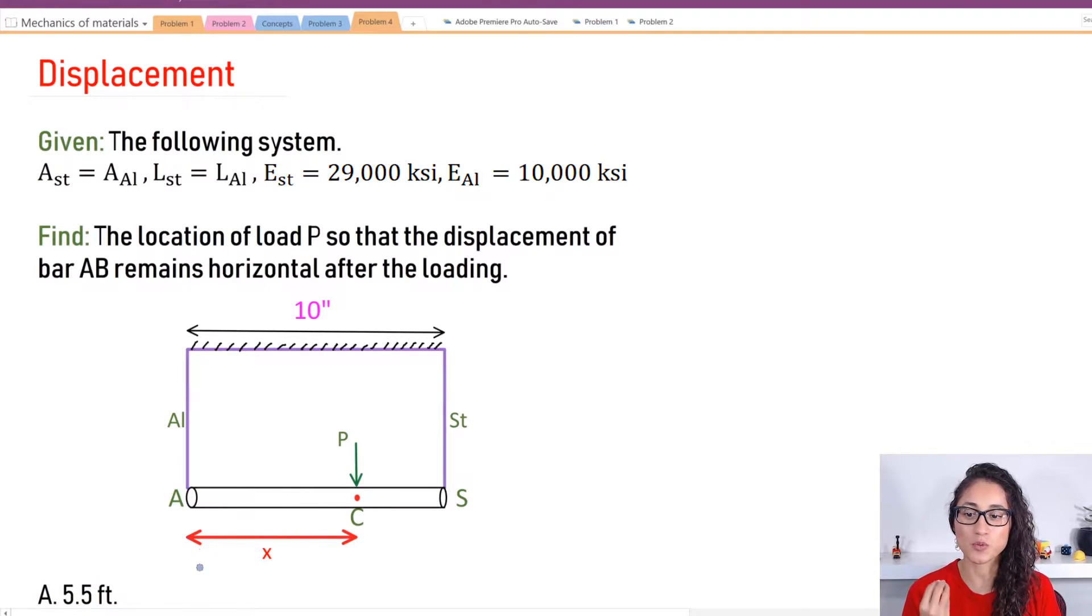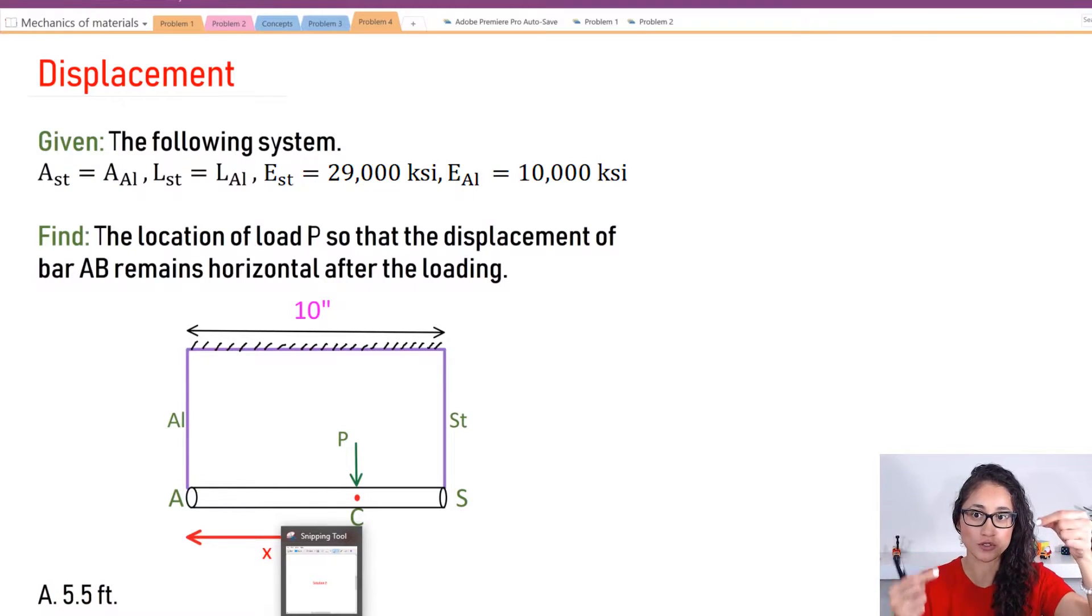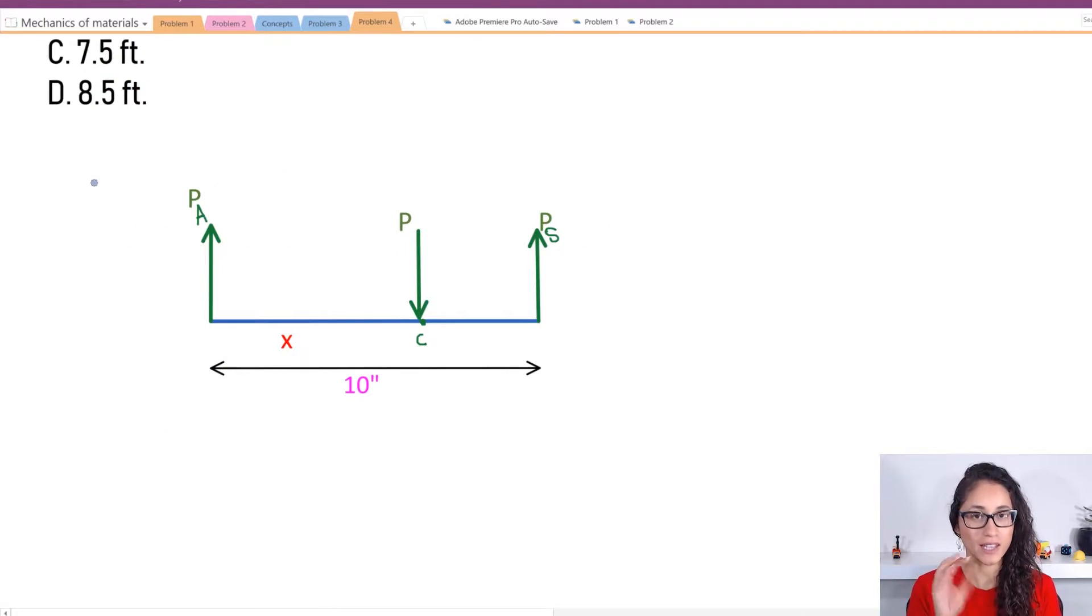So we're given this and we want to find what is this distance from here to here where we can apply P so that bar AB remains horizontal. So it doesn't move this way or this way, the displacement happens horizontally.